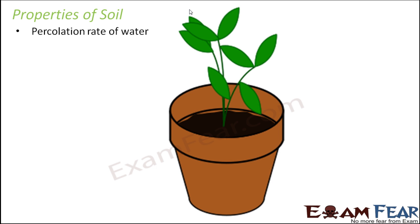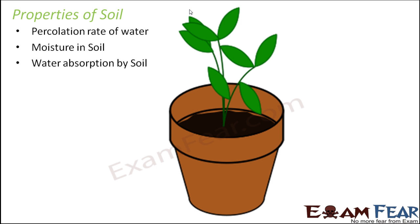We will talk about three important properties of soil. First is the percolation rate of water — that is how fast or how slow water can drain through a particular type of soil. The next property is moisture in soil, and the third one is water absorption by the soil.